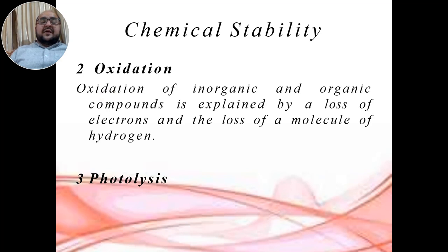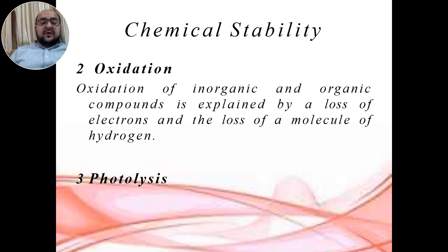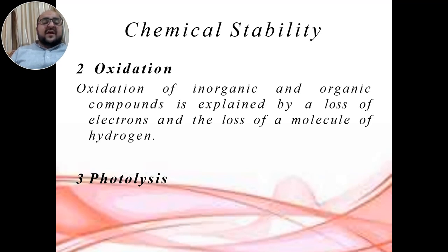In chemical degradation, we will also talk about chemical stability. Another process in chemical degradation is oxidation. Oxidation is a chemical process involving the loss of electrons, the addition of oxygen, the gain of oxidation state, or the removal of hydrogen atoms from a molecule or compound. Oxidation of inorganic and organic compounds is explained by the loss of electrons and loss of hydrogen molecules.